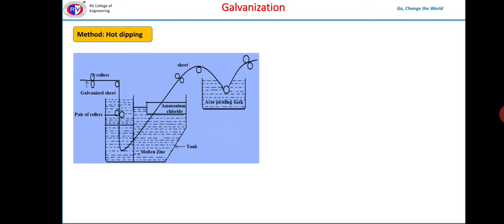Example: tinning. Now we will discuss one by one, that is anodic coating. Example: galvanization.